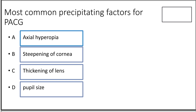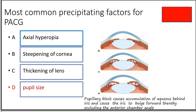Fourth question: the most common precipitating factor for angle closure glaucoma — option A axial hyperopia, option B steepening of cornea, option C thickening of lens, option D pupil size. The answer is option D, pupil size, because the main culprit behind angle closure glaucoma is pupillary block. When pupillary block happens, there is accumulation of aqueous behind the iris, causing the iris to bulge forward, occluding the angle and preventing aqueous drainage, thereby increasing IOP.